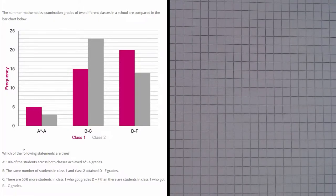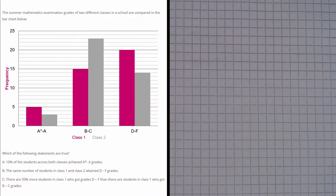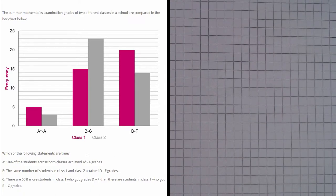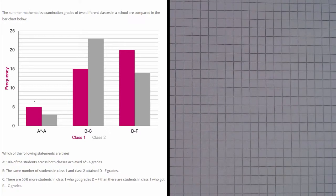Now the question asks which of the following statements are true. Let's have a look at part A. Statement A says that 10% of the students across both classes achieved A star to A grades. So what we need to do here is find out the total number of students. We're not given it in the question, so we're going to have to add up the heights of all of these bars.